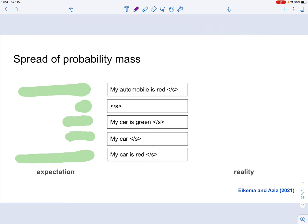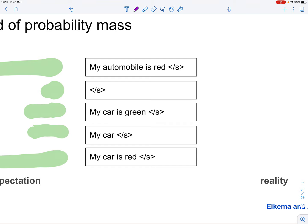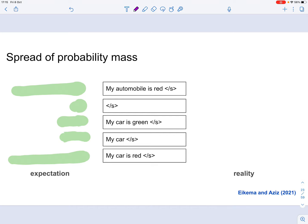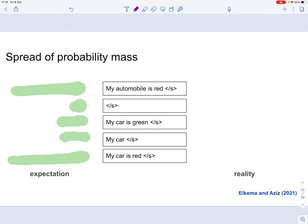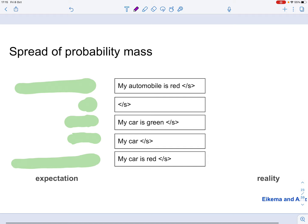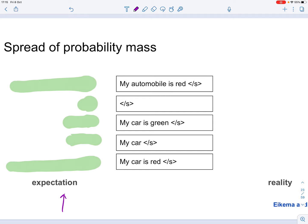And a different view on the same problem is looking at how probability mass is spread over different candidate translations. So let's suppose as an example, you're translating a sentence along the lines of my car is red. And we're looking at a certain selection of candidate translations that the model can assign a probability to and that we can then choose from with a decoding algorithm like beam search. Now, the expectation that many people have, in my opinion, including myself, is that how the model spreads probability mass over these candidates should look something like this on the left here.